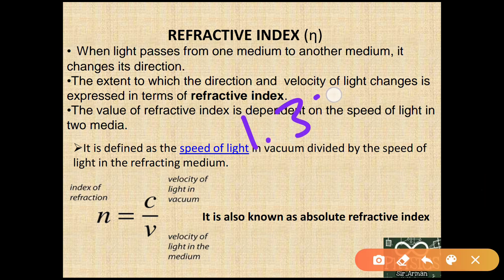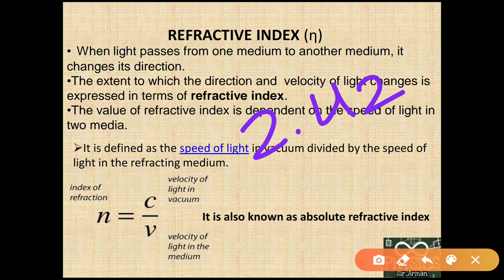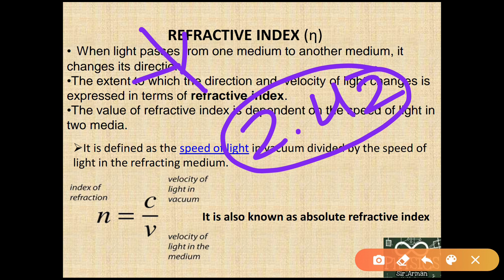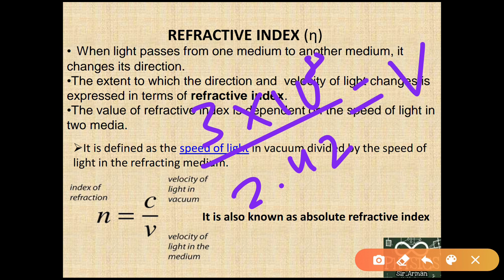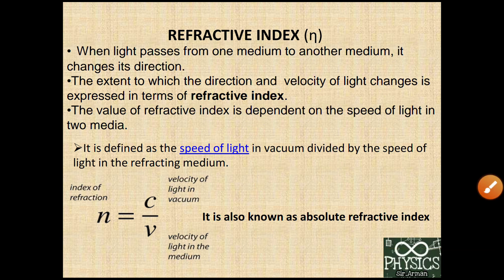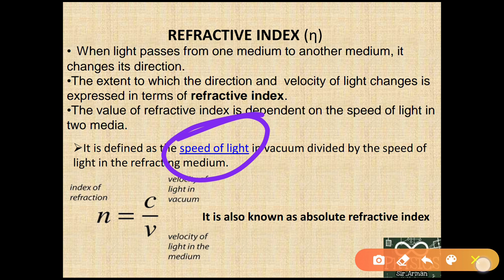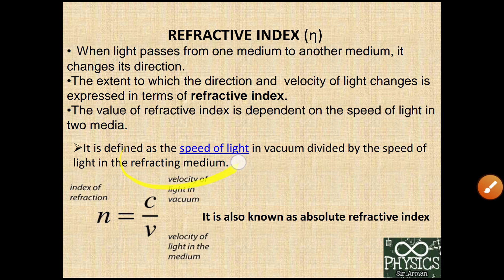Similarly, the refractive index of diamond is 2.42 — that is, when light enters from vacuum into diamond, its speed decreases by 2.42 times. The original speed in vacuum is 3×10⁸ m/s; divide by 2.42 and you get the speed of light in diamond. So we can define the absolute refractive index as the speed of light in vacuum divided by the speed of light in the refracting medium.